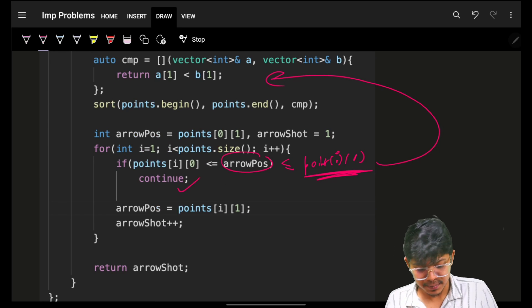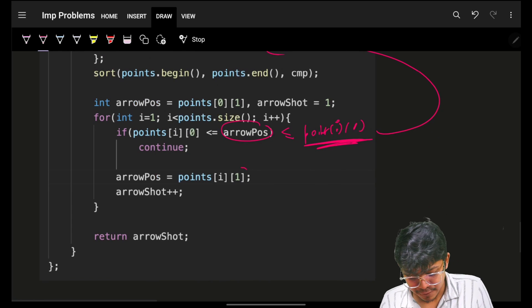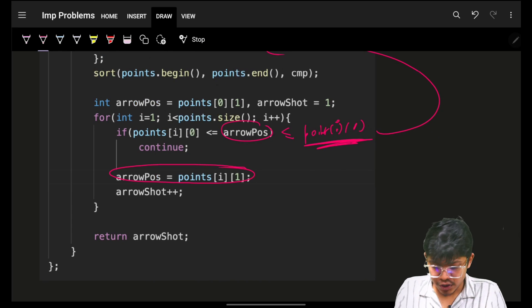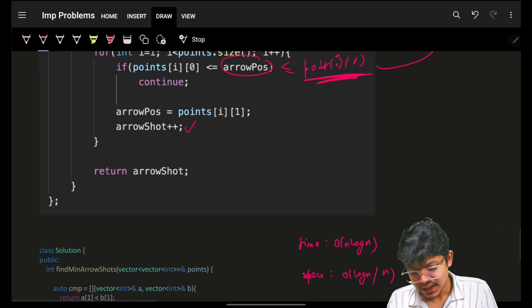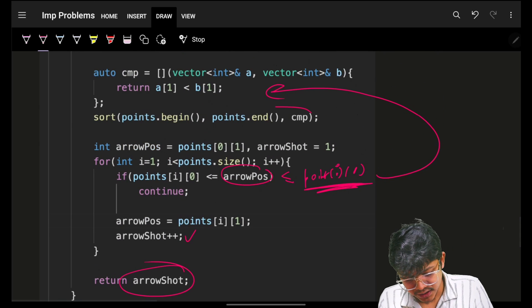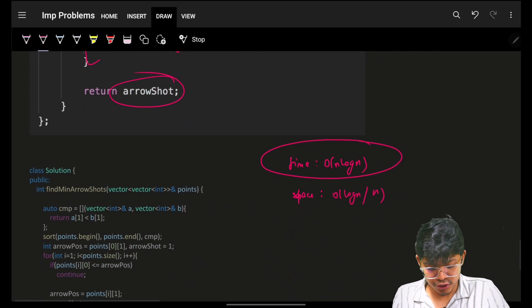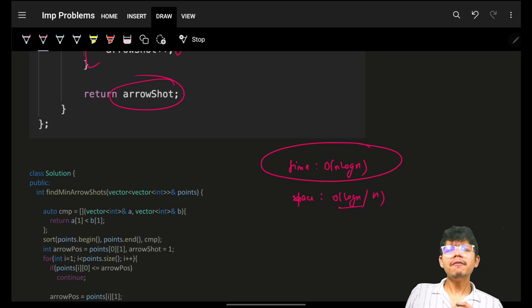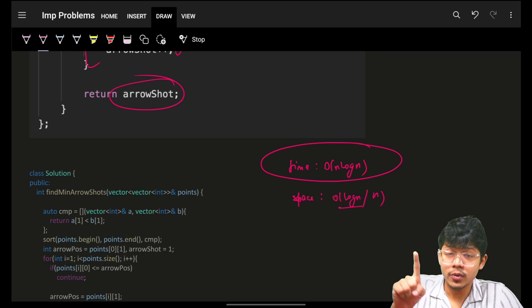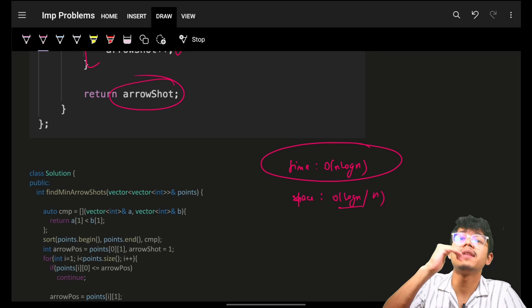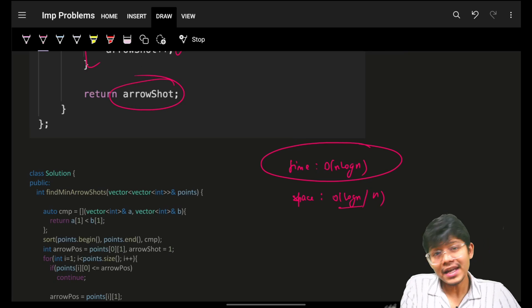Check if the starting index is less than the current arrow position — if so, we can shoot it, since the ending is guaranteed to be more because we sorted by end index. So no new arrow is needed; continue to the next interval. Otherwise, update the new arrow position to the interval's end and increase count by one. Return count. The time complexity is O(n log n) due to sorting, and space complexity is O(log n) for C++ and Java or O(n) for Python.